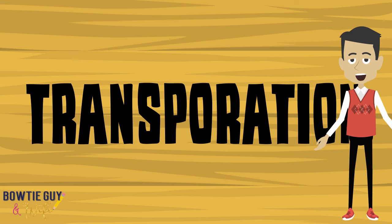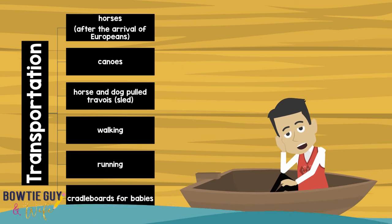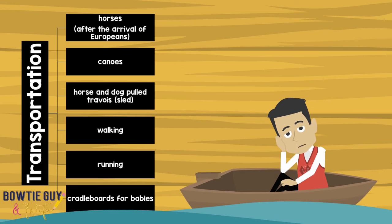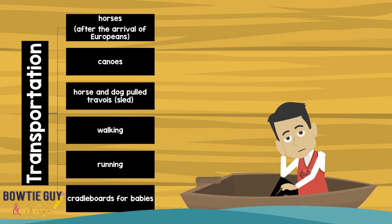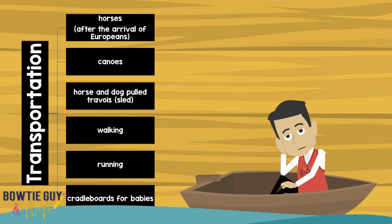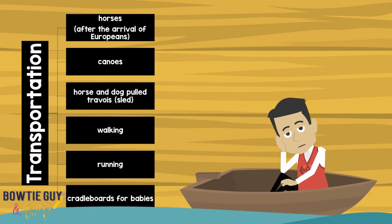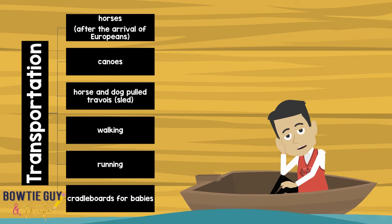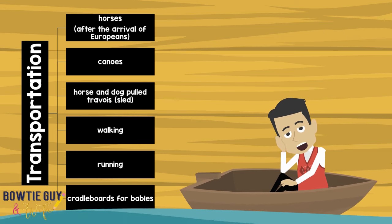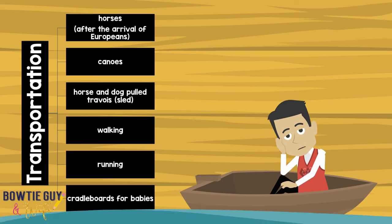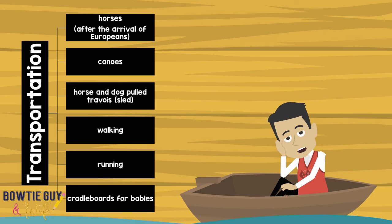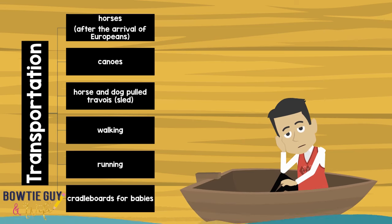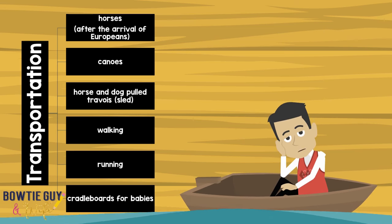What kind of transportation did the American Indians of the Plains use? With the introduction of European horses, they adopted horses as a primary mode of transportation. They also used boats or canoes along rivers, and interesting sleds known as travois that were sometimes pulled by horses or dogs. And just like us, they also walked or sometimes ran.